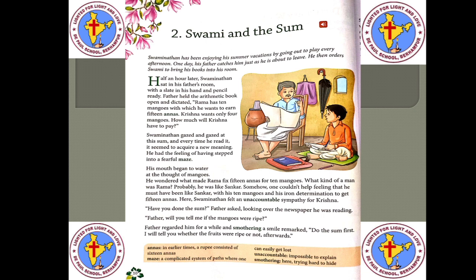Half an hour later, Swaminathan sat in his father's room with a slate in his hand and a pencil ready. Father held the arithmetic book open and dictated: Rama has 10 mangoes with which he wants to earn 15 anas. Here, 'anas' refers to an old currency — in early times, a rupee consisted of 16 anas. Krishna wants only 4 mangoes. How much will Krishna have to pay?